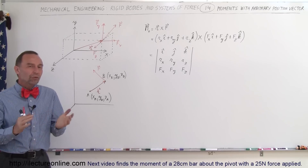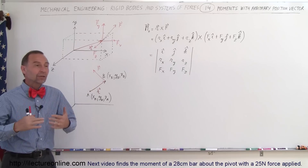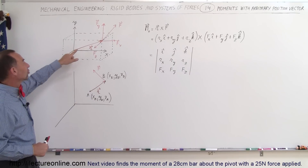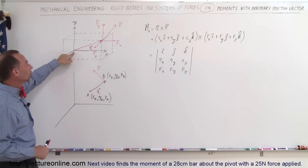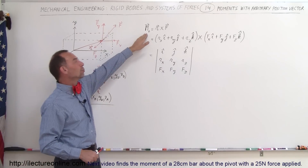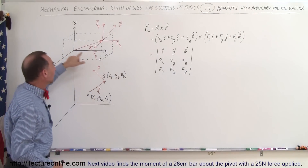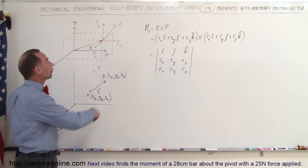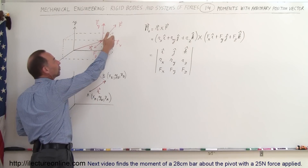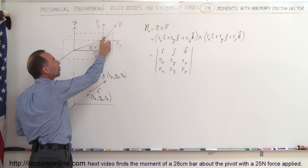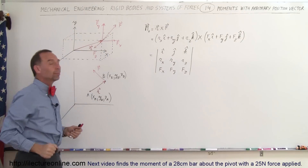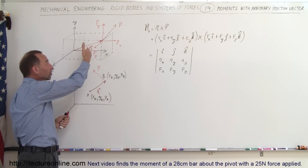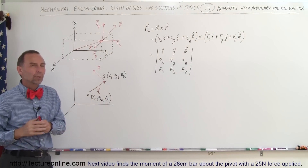Welcome to ElectronLine. So far we've typically worked with problems or examples where the position vector starts at the origin, and therefore we talk about the moment with respect to the origin. We have the position vector and some arbitrary force F, which will have an X component, a Y component, and a Z component. Likewise, the position vector will have an X component, a Y component, and a Z component.